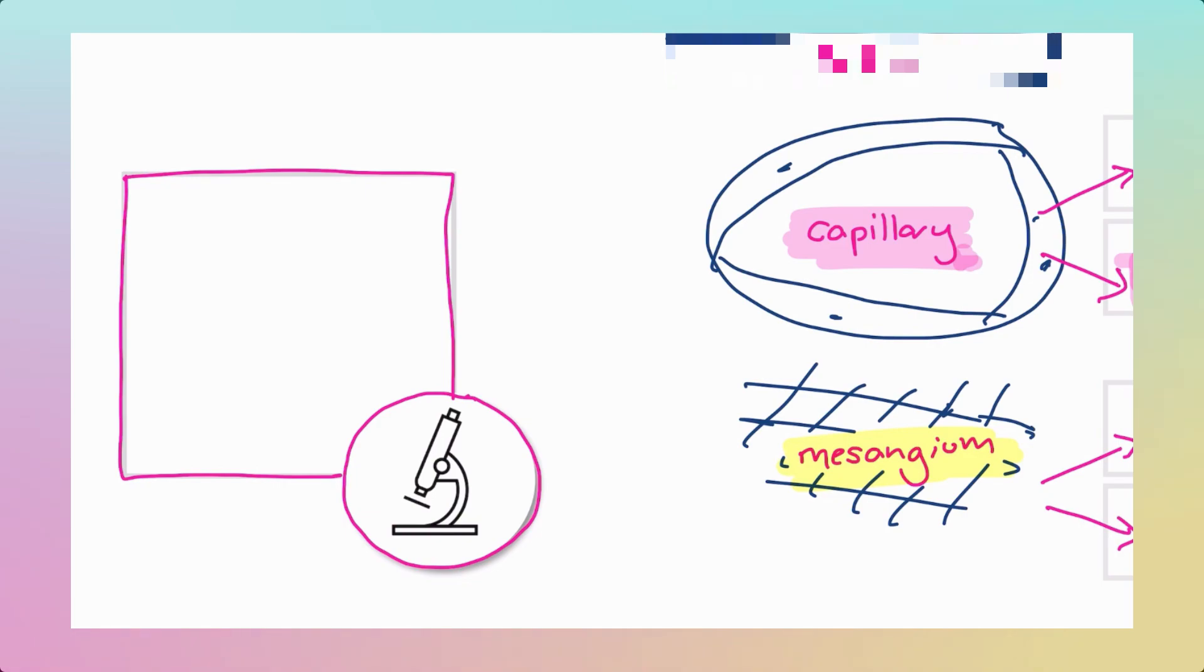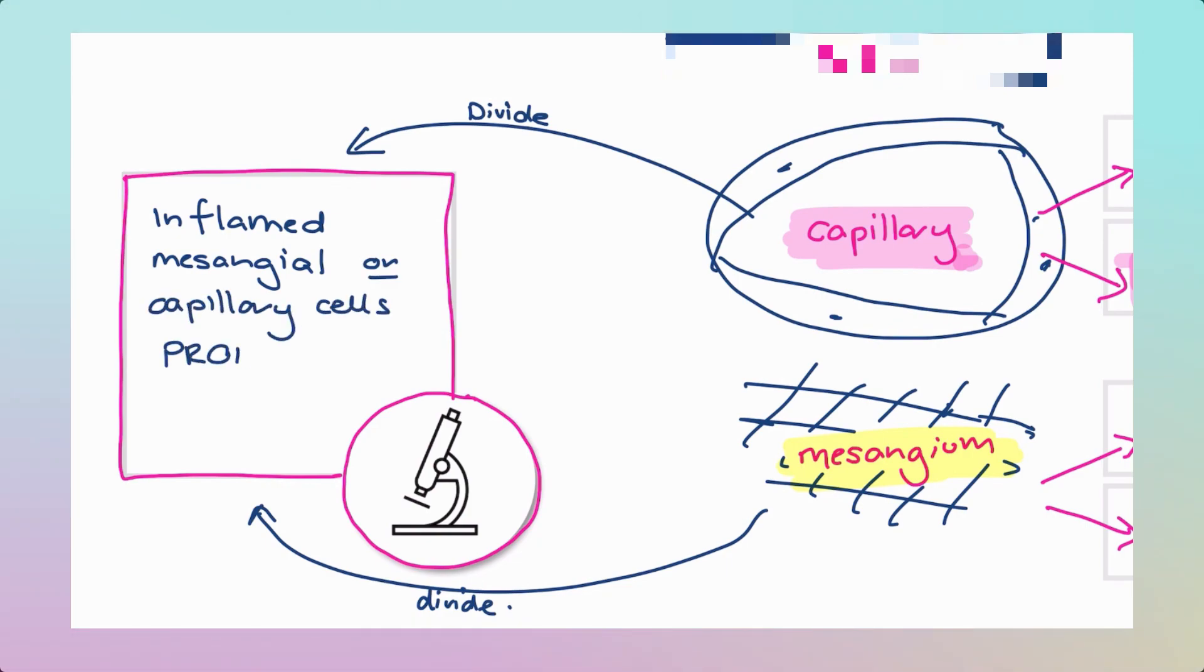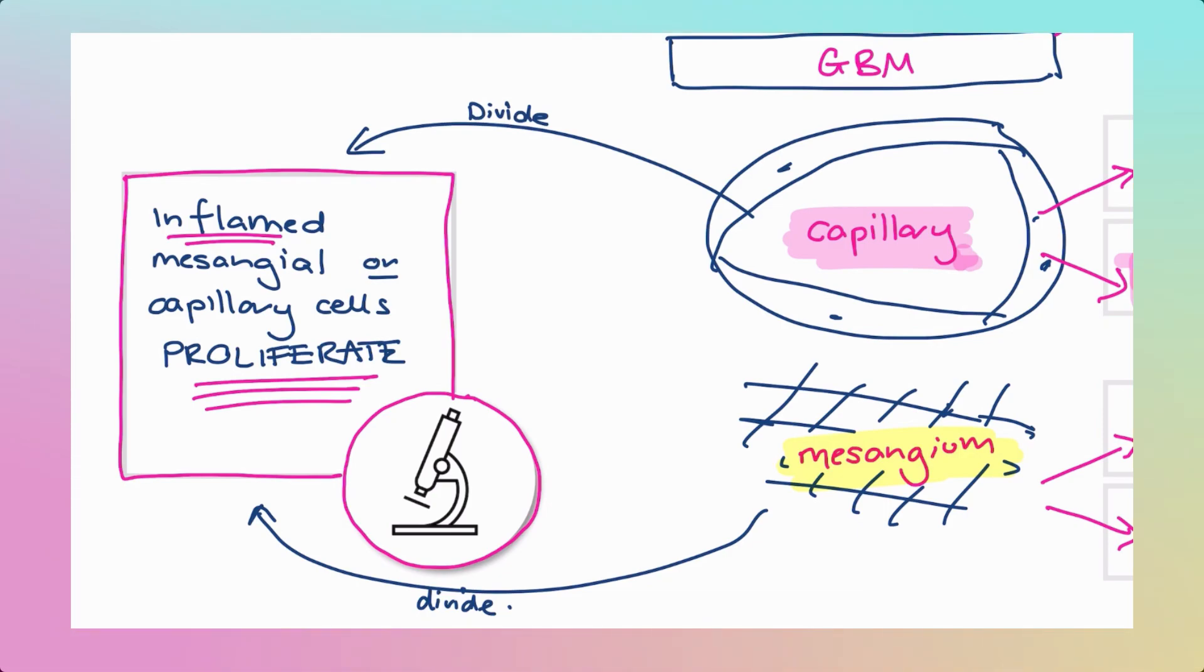This sort of inflammation to the mesangium or capillaries for some reason just makes these cells divide. It makes them proliferate. That is the behavior somehow of an upset mesangial cell or glomerular capillary cell. They just hit the proliferate button and we can see under the microscope that we have all of these extra cells, all of these extra nuclei. So inflamed mesangial cells or capillary cells proliferate in response. It just means they're upset and inflamed.